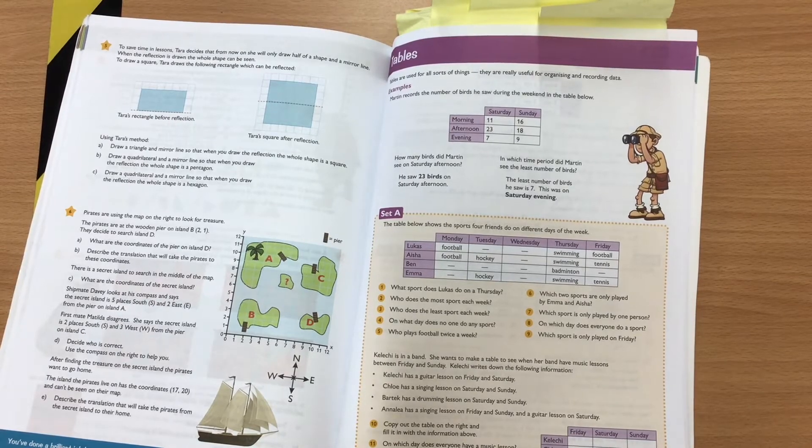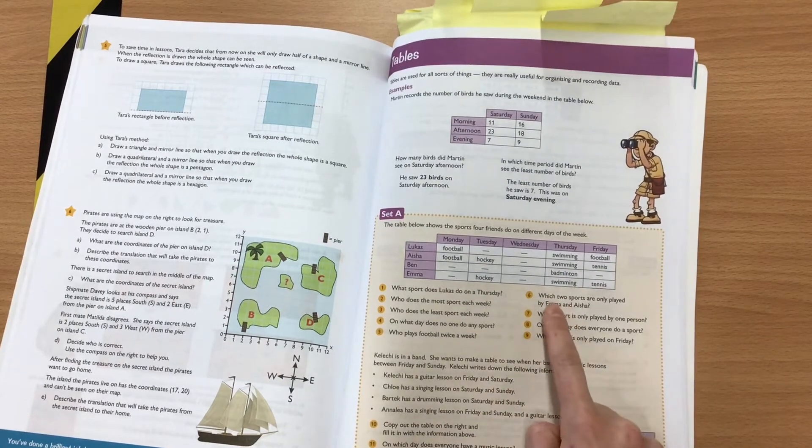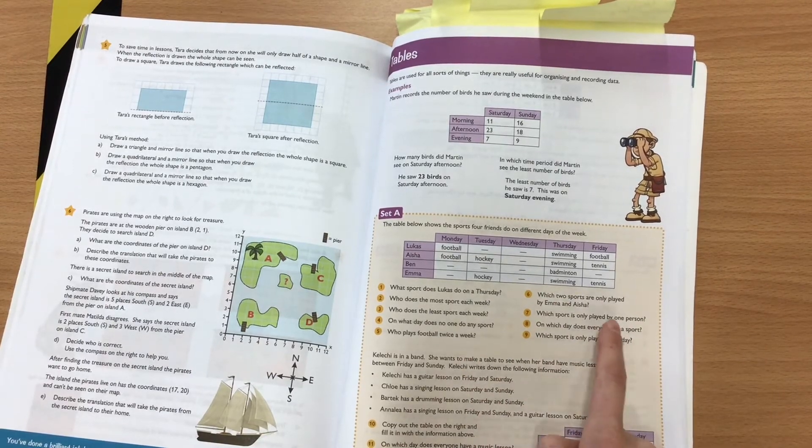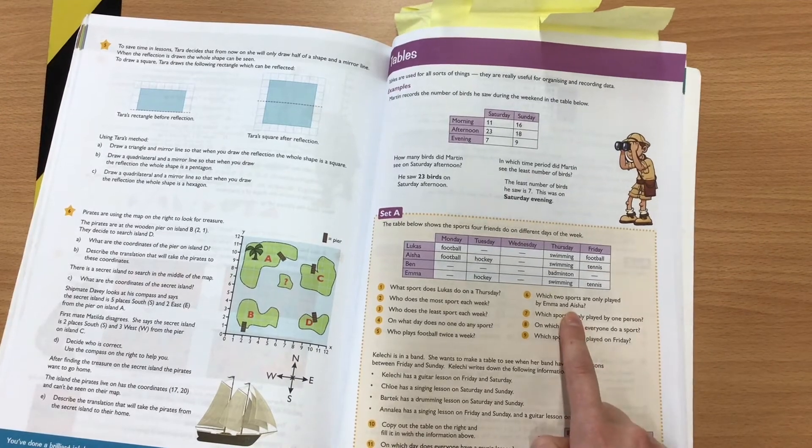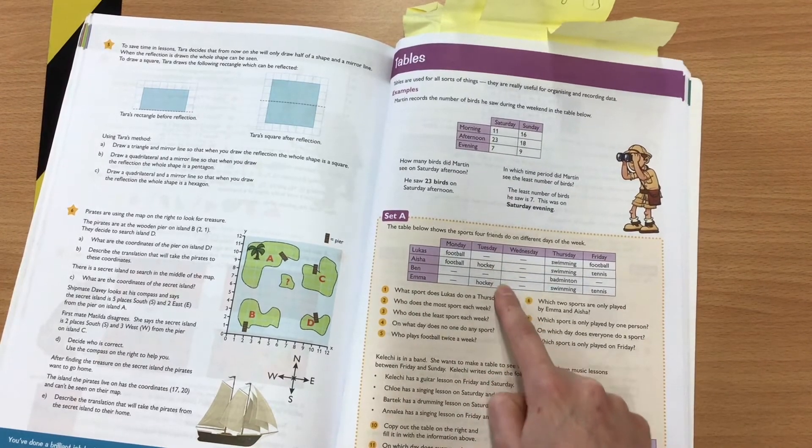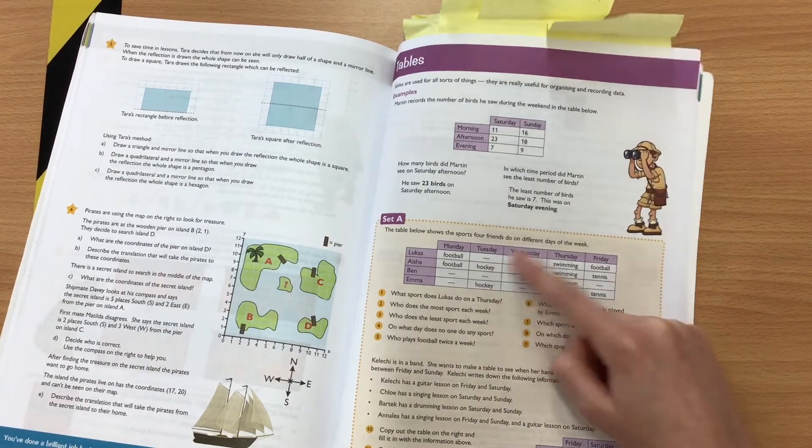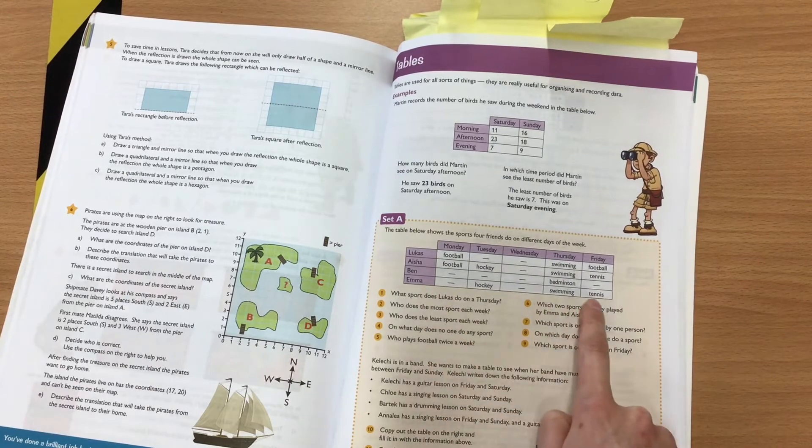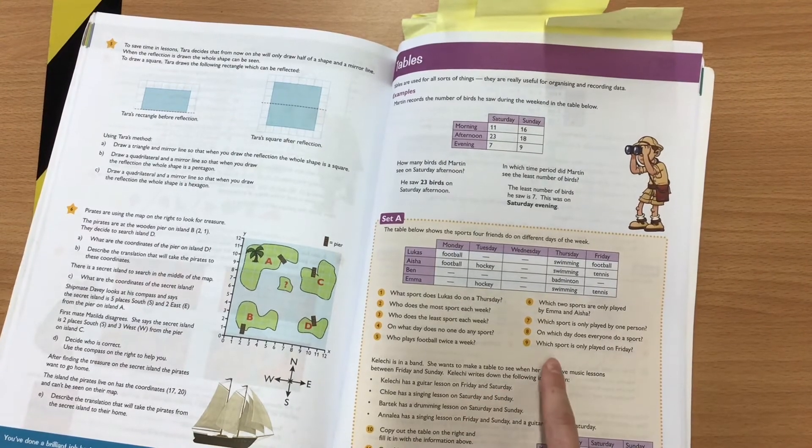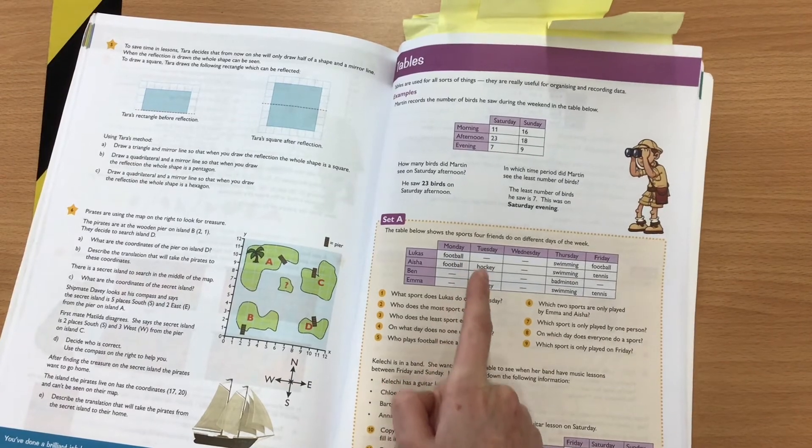The next question I'm going to go through with you is question six. So question six says, which two sports are only played by Emma and Aisha? So if we have a look at Aisha and we have a look at Emma, they both play hockey. And if you have a look, it says Ben and Lucas don't play hockey, so that might be one sport. And if we also have a look at the other sports they play, they also both play tennis, and Ben and Lucas don't play tennis. So the two sports that are only played by Emma and Aisha are hockey and tennis.